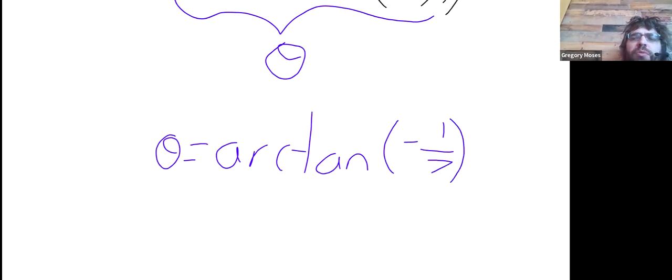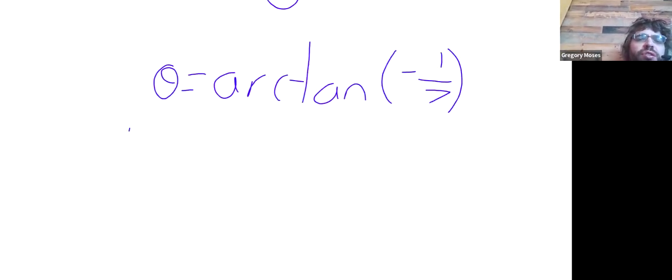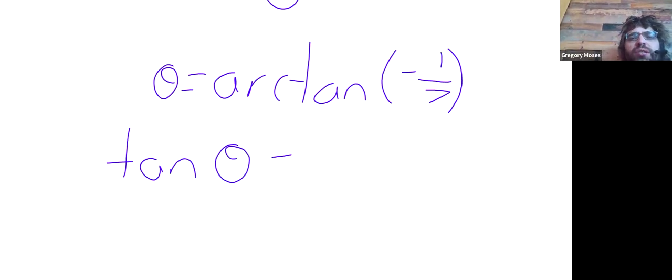Now, I'm going to take the tangent of both sides. On the right, the tangent and the arc tangent will cancel, and I'll get negative one-seventh.